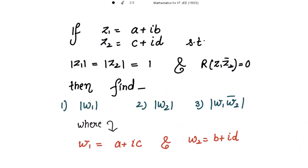If z1 is equal to a plus iota b and z2 equal to c plus iota d, where z1 and z2 are complex numbers such that their moduli are equal to 1, and the real part of the product of z1 and z2 conjugate is 0. Then we have to find mod of w1, mod of w2, and mod of w1 into w2 conjugate, where w1 is a plus iota c and w2 is b plus iota d. So we need to find all these three values.